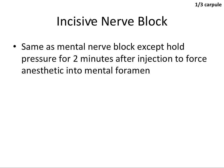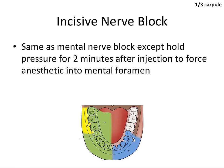To numb the actual teeth, you need the incisive nerve block. It's identical to the mental nerve block, except you hold pressure directly on the foramen for two minutes after the injection to force anesthetic into the mental foramen. This bathes the incisive nerve, which supplies the anterior teeth and usually both premolars, achieving pulpal anesthesia. It's the same technique as the mental block, just with the added pressure step.